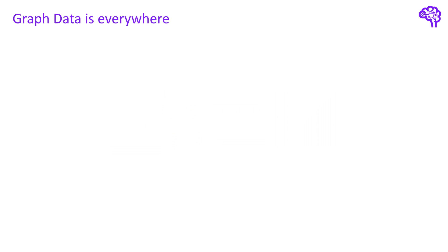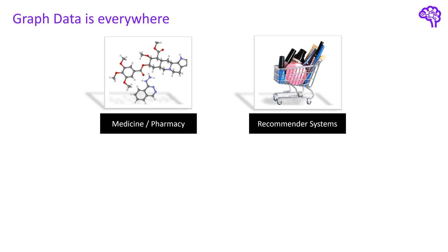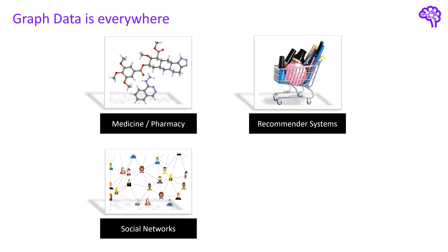Even though graph neural networks might be something new for you, you might already know that graph data exists in many areas. A lot of datasets with molecules are available in the area of medicine or pharmacy. These molecules are usually structured as a graph consisting of atoms and bonds. E-commerce companies usually use large knowledge graphs to build useful recommender systems that suggest interesting products or movies. Another self-explaining example are social networks such as Facebook, where people stand for nodes which are connected in certain relationships.